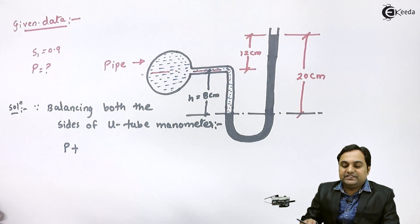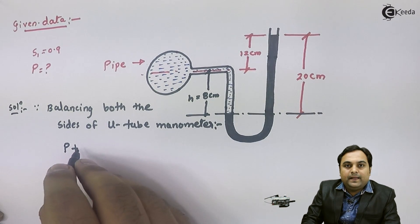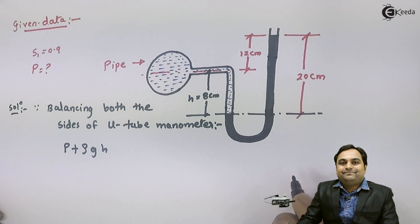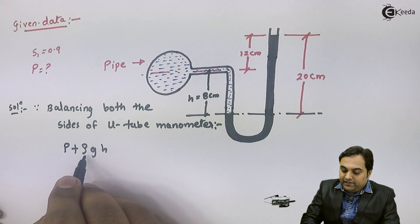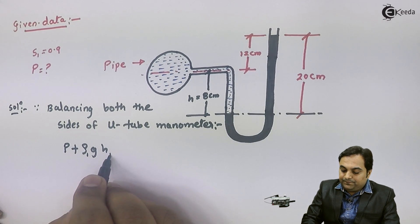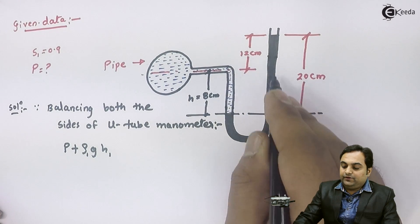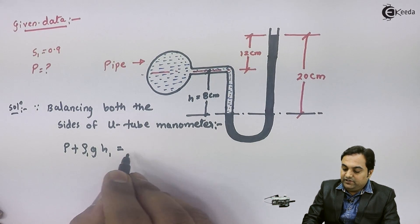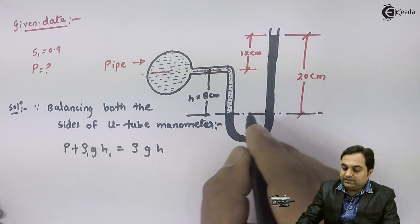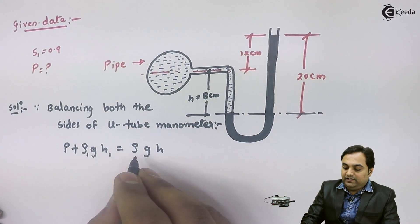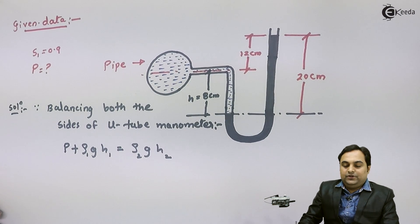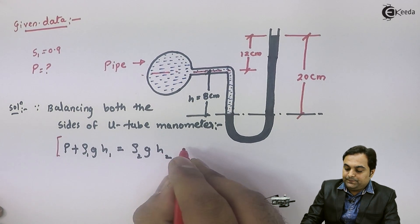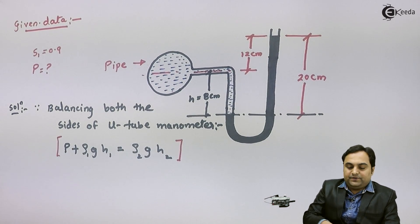This height of 8 centimeters of fluid will also exert a pressure, given by the hydrostatic law as ρgh. The fluid inside the pipe is denoted by suffix 1, and on the right side we only have mercury, denoted by suffix 2. So the balancing equation for this U-tube manometer is: P + ρ₁gH₁ = ρ₂gH₂.